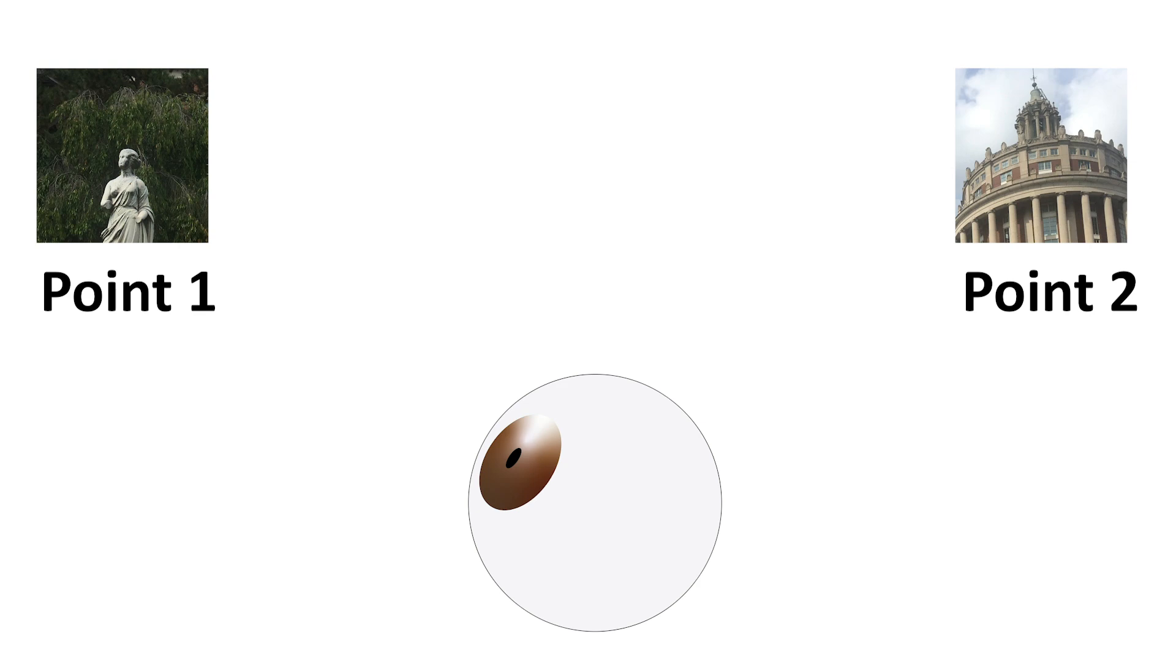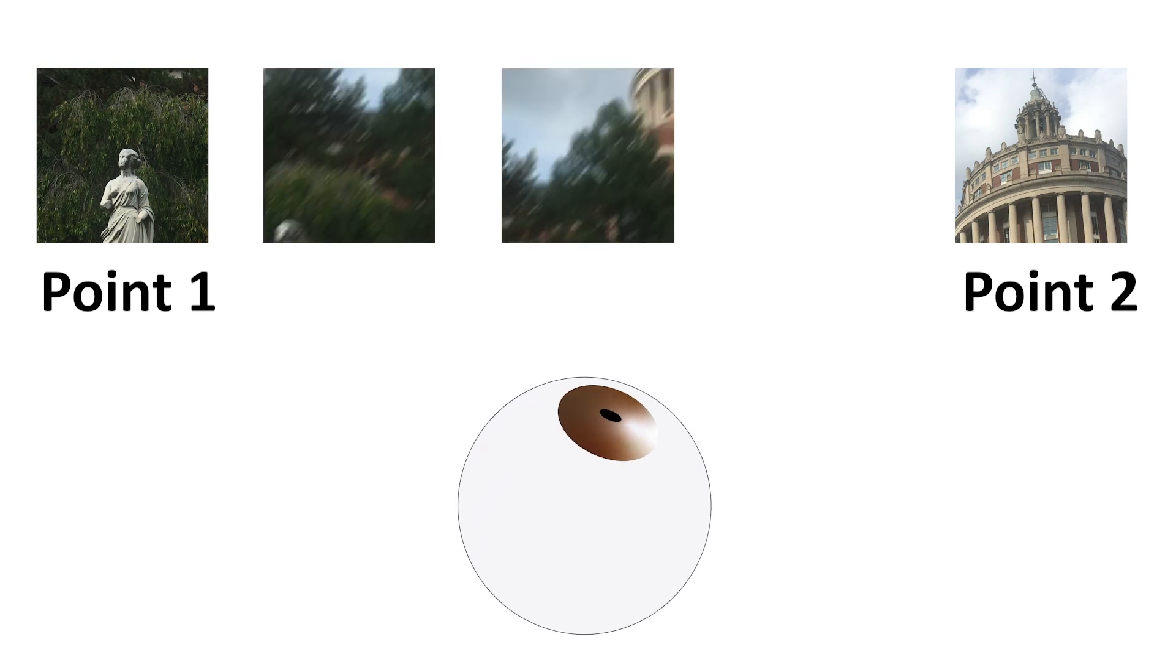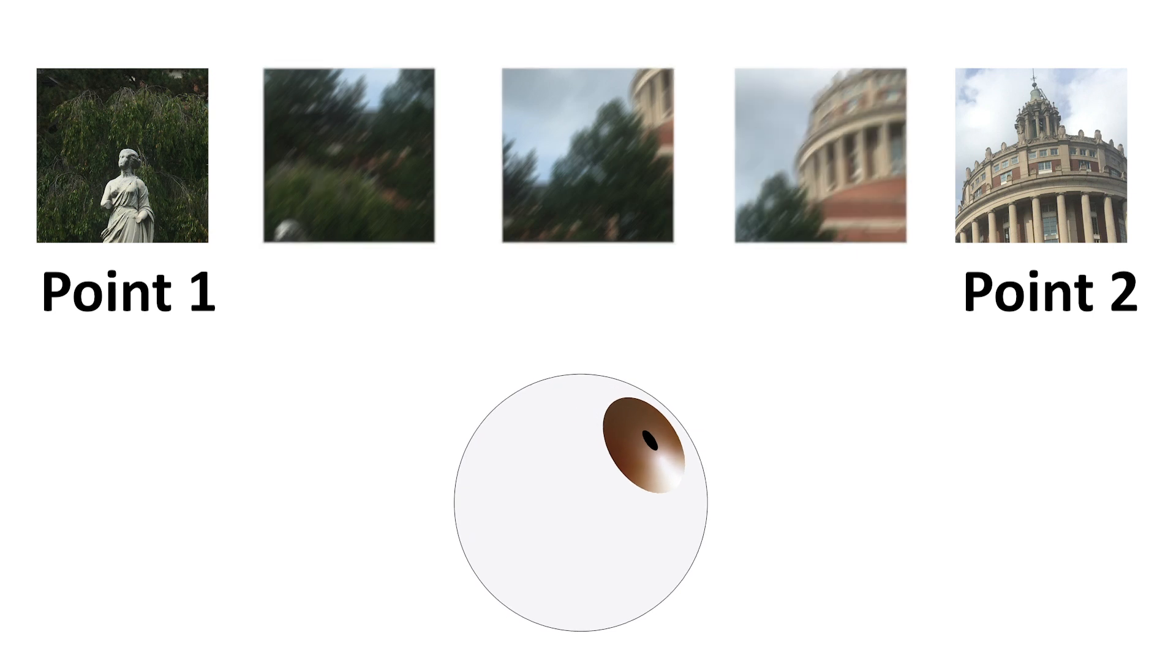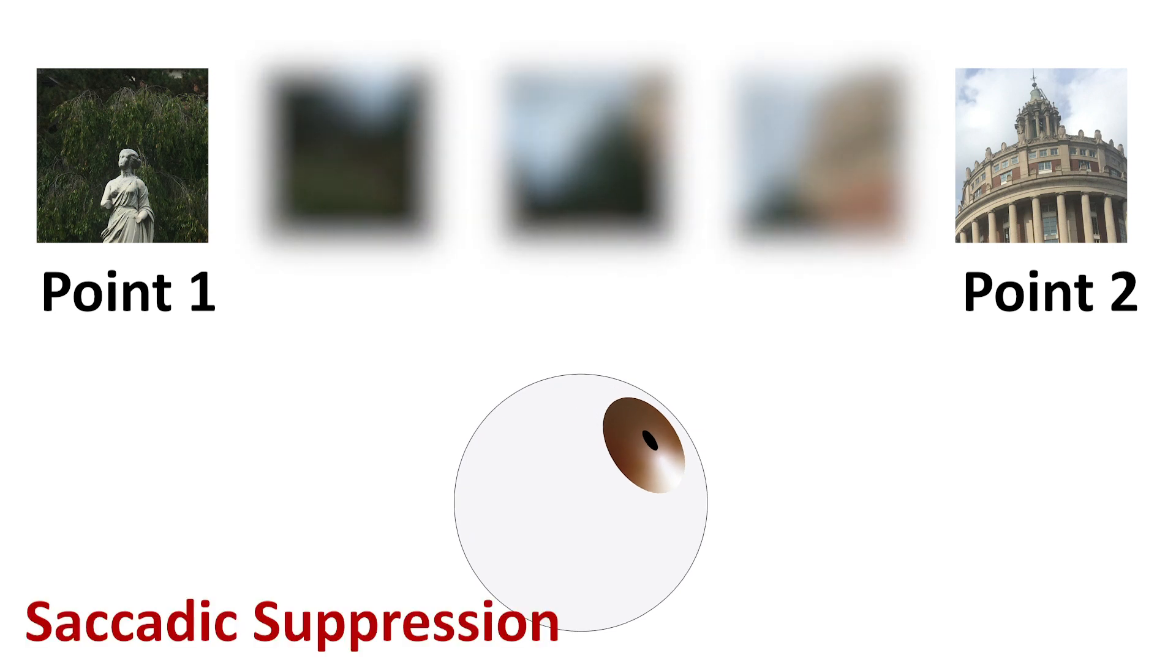Interestingly, vision seems suppressed during saccades, leaving us unaware of the translation of the image on the retina during the gaze shift, a phenomenon known as saccadic suppression.